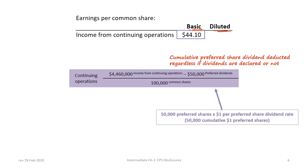We begin with the calculation of basic EPS starting with the $4,460,000 income from continuing operations, and then we subtract the preferred dividend entitlement. The reason why we do this is because if we're referring to earnings per common share, we must deduct the preferred dividend that the preferred shareholders are entitled to, and what's left over goes to the common shareholders. So if we start with $4,460,000 and pay $50,000 to the preferred shareholders, we'd be left with $4,410,000 available to the common shareholders. Dividing by 100,000 common shares gives us a basic EPS of $44.10.